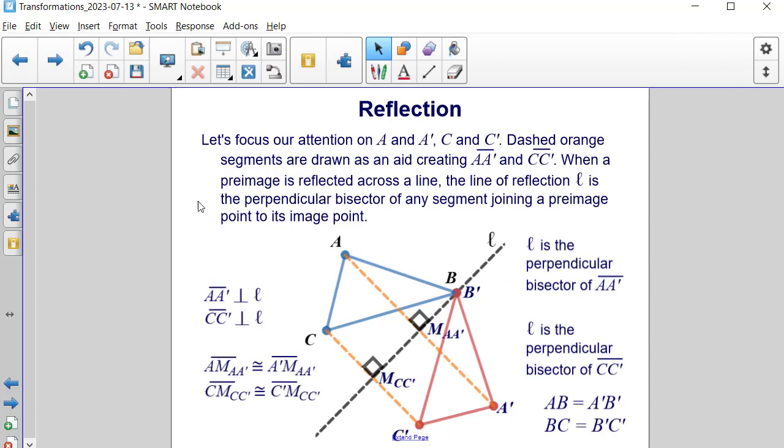Now, let's focus our attention on mapping from A to A prime and from point C to C prime. The dashed orange segments are drawn as an aid, creating segment A to A prime and segment C to C prime. When a pre-image is reflected across the line, the line of reflection L is the perpendicular bisector of any segment joining the pre-image and image.